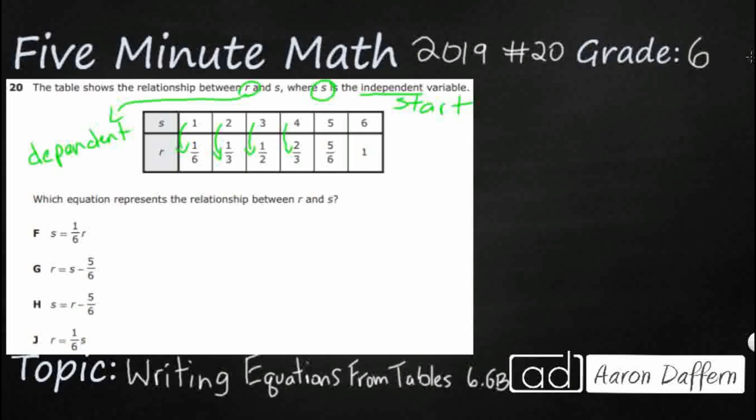So the numbers are getting smaller. So s, something happens to s and it becomes smaller, one to one sixth in the first situation, two to one third, so on and so forth. So the two ways to make something smaller is we can either subtract or we can divide.